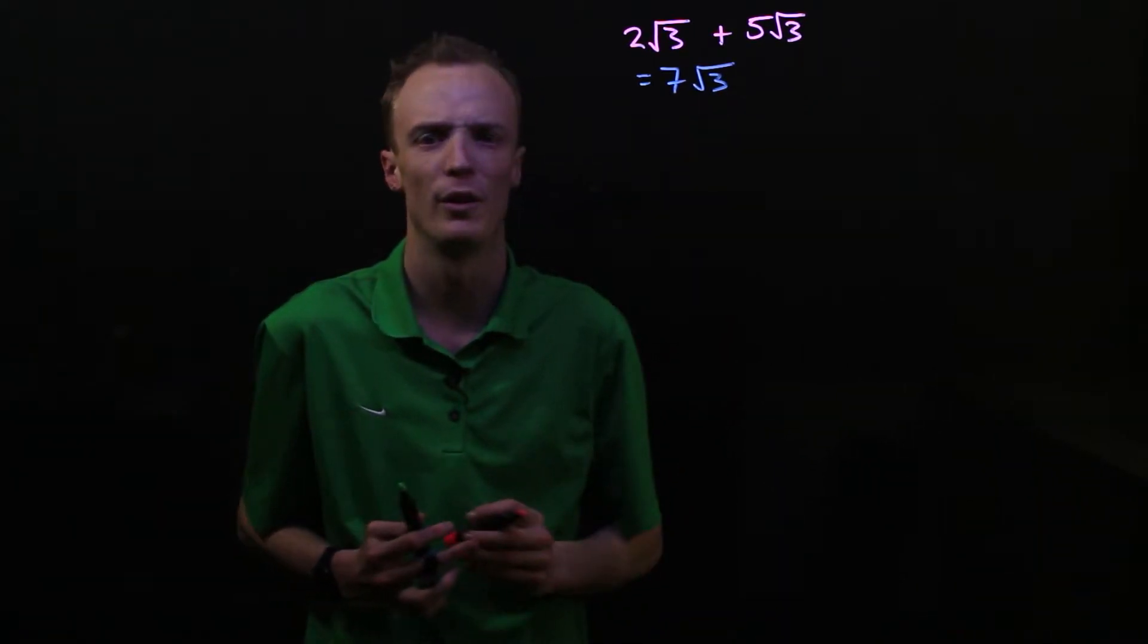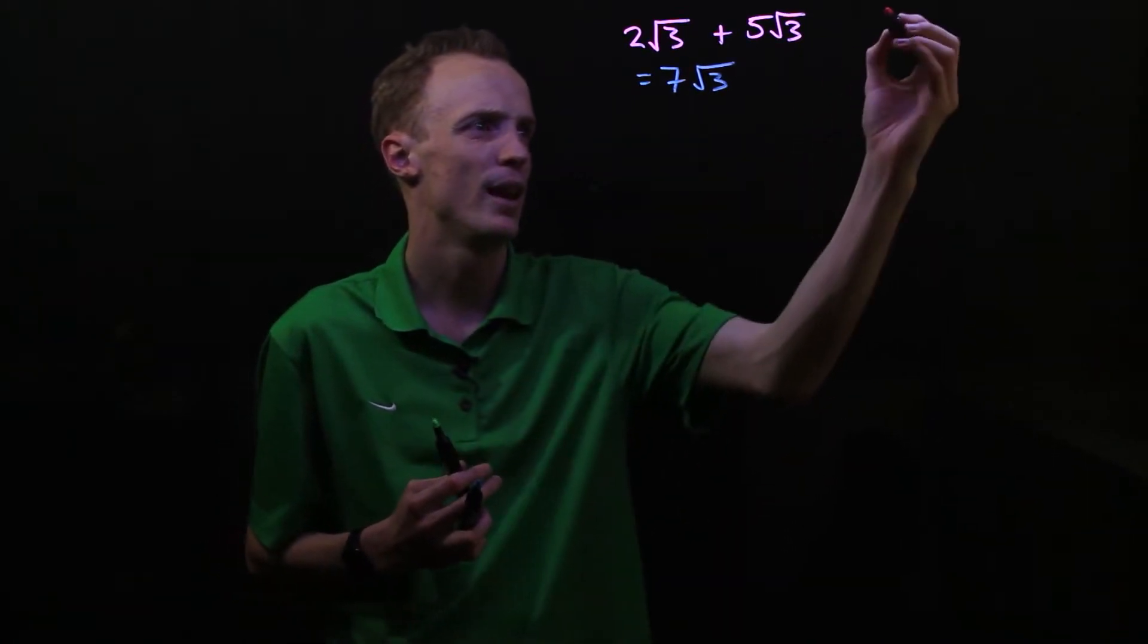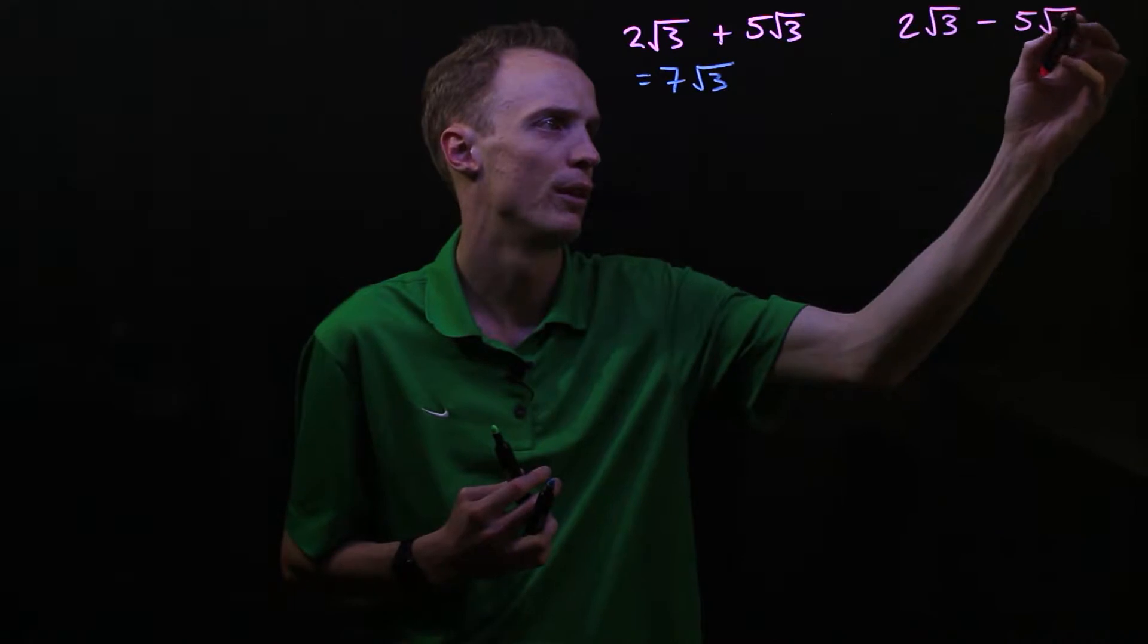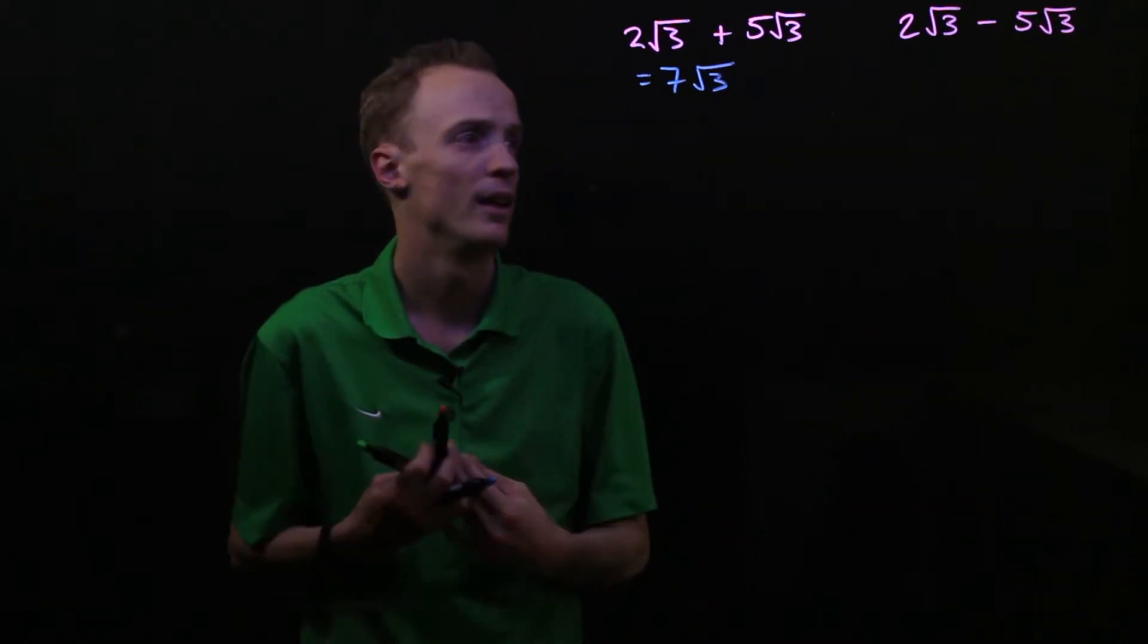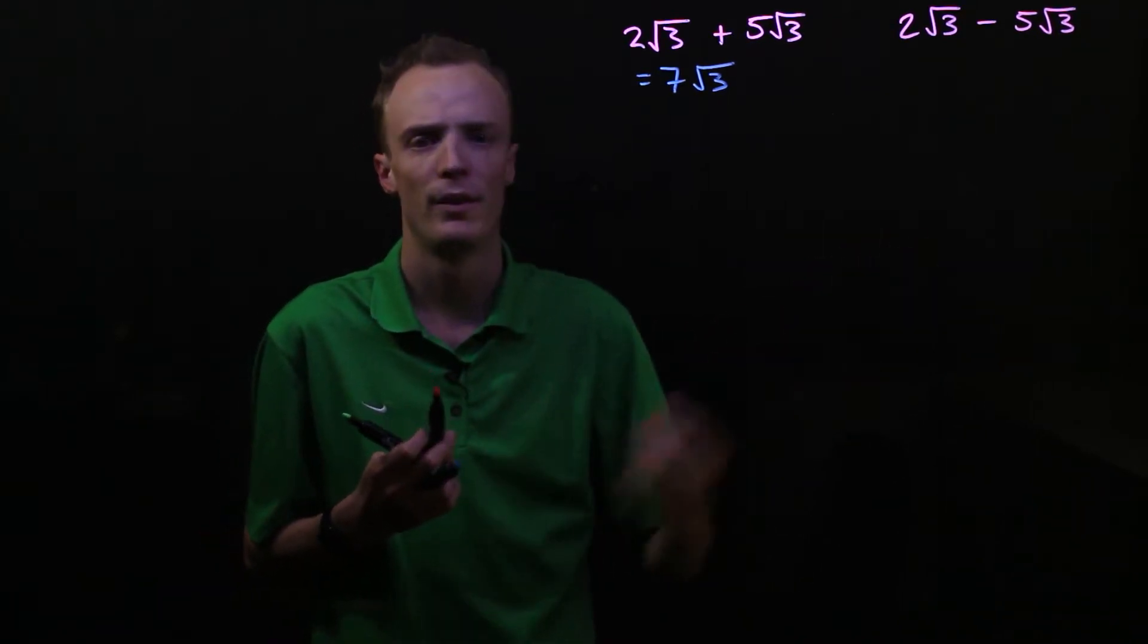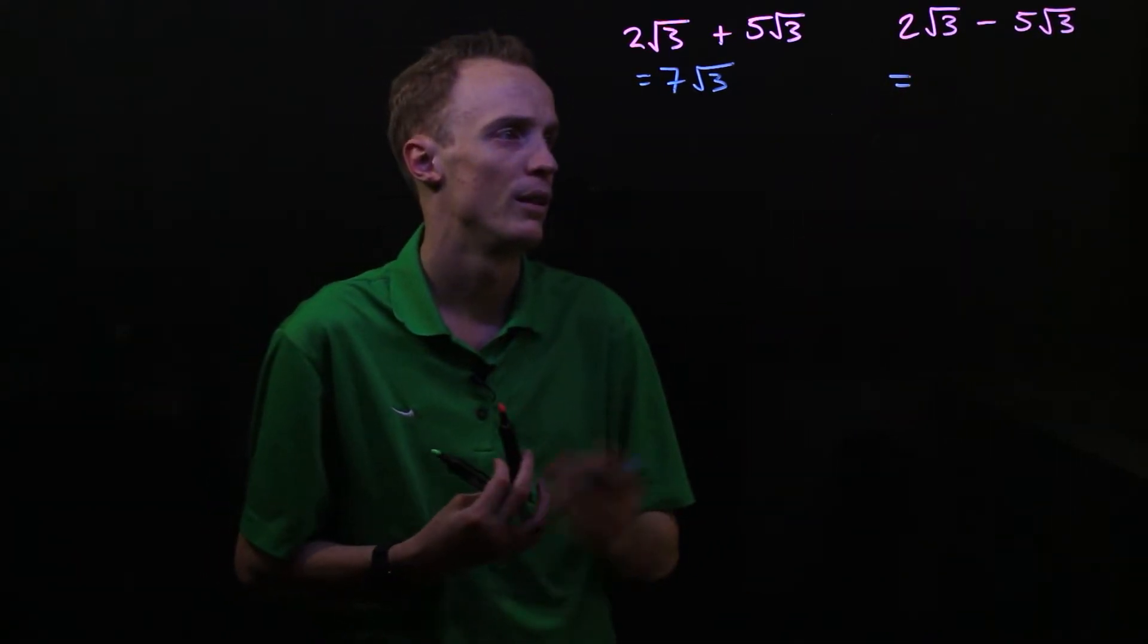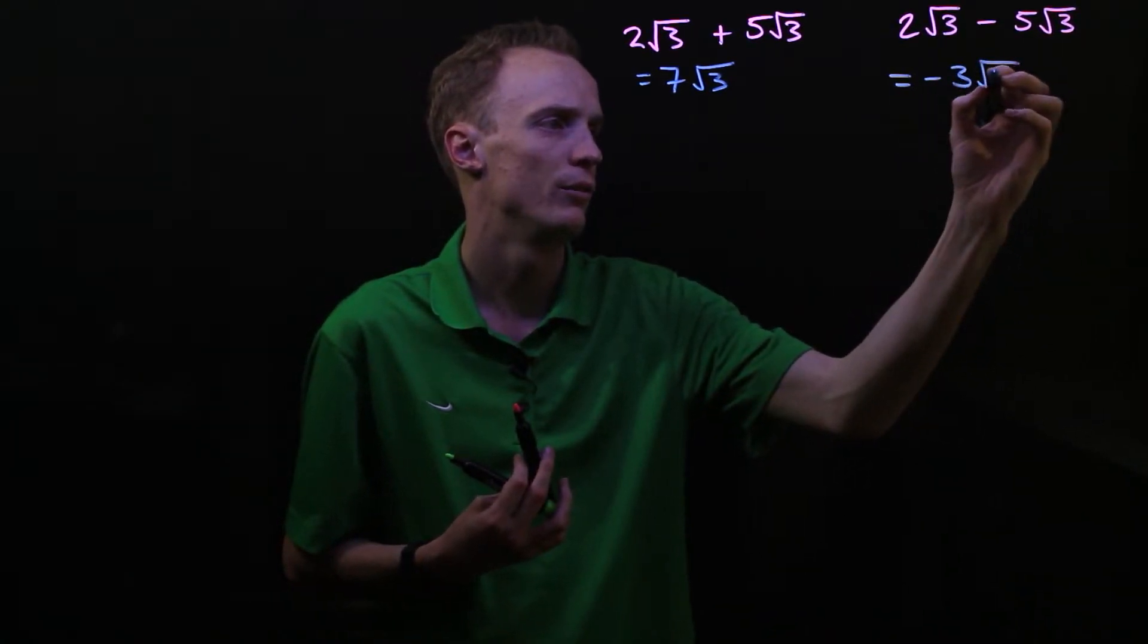A similar process can be followed when we're subtracting these surds. For example, if I had 2√3 and I was subtracting away 5√3, I can treat this like I would when subtracting algebraic terms from each other. In this case our like term is √3, so this is the same as saying 2 subtract 5 lots of √3, and when we do that we end up with -3√3.